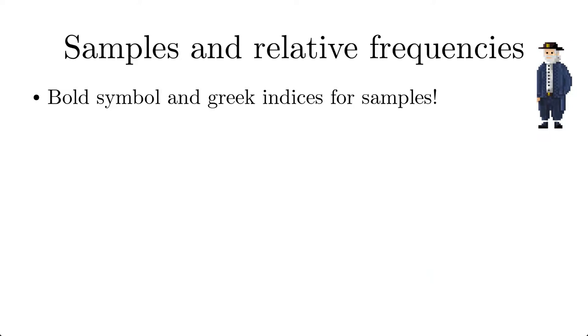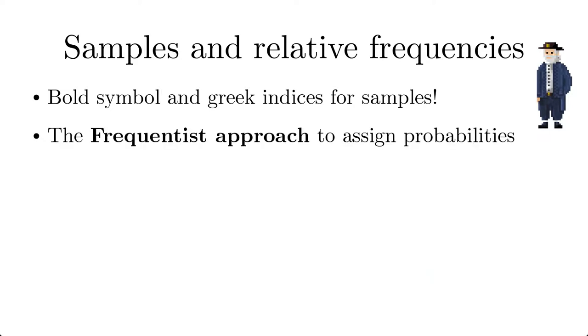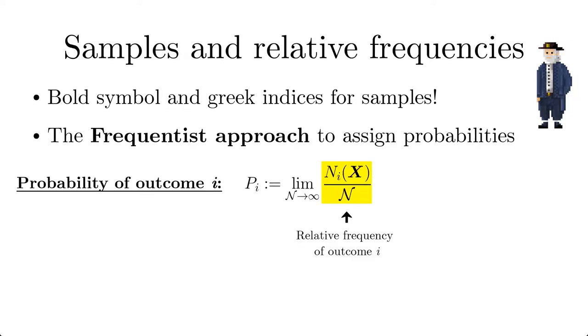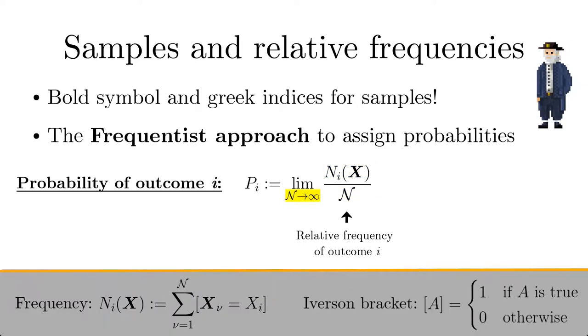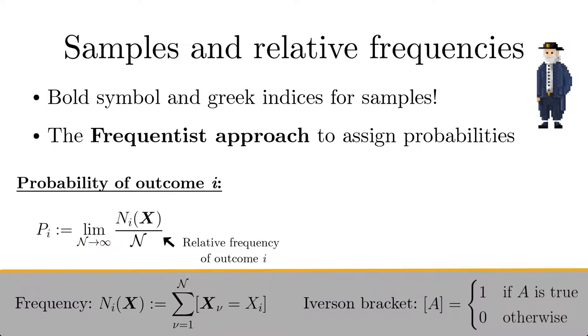This brings us to the frequentist approach of how to define the probability of an outcome, namely by the relative frequency of its occurrence in the limit of an infinite sample size. An interesting question, which will be partly answered by the law of large numbers, is the following: How well is the intrinsic probability approximated by the relative frequency of a finite size sample?